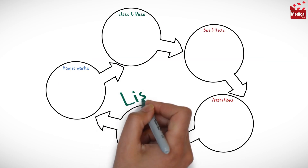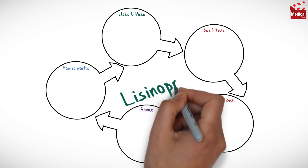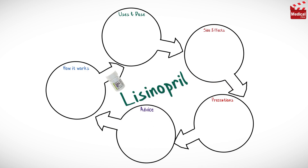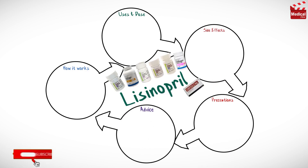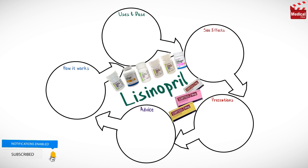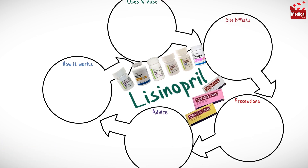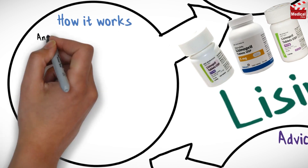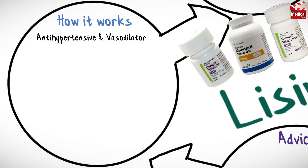In this video we'll briefly discuss what lisinopril is, how it works, what it's used for, the dose and side effects, contraindications and precautions. Lisinopril is an antihypertensive and vasodilator drug. It belongs to a category of drugs called angiotensin converting enzyme inhibitors.